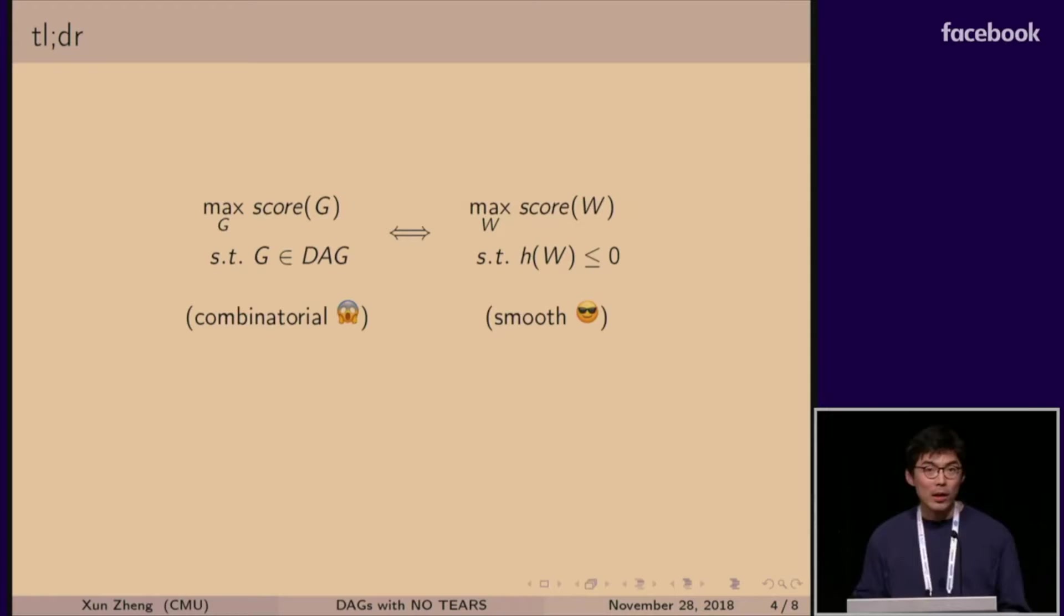So this is a one-slide summary of our paper. On the left, you are seeing the good old combinatorial score-based optimization problem, where we are maximizing over score and subject to the graph being a directed acyclic graph. And on the right is our equivalent formulation. We're changing the graph variable into an adjacency matrix variable, and we're replacing the directed acyclic graph constraint into a smooth function, smooth inequality constraint. And the right-hand side problem is now a smooth constraint optimization problem, and we can just use any existing numerical solvers to solve this.